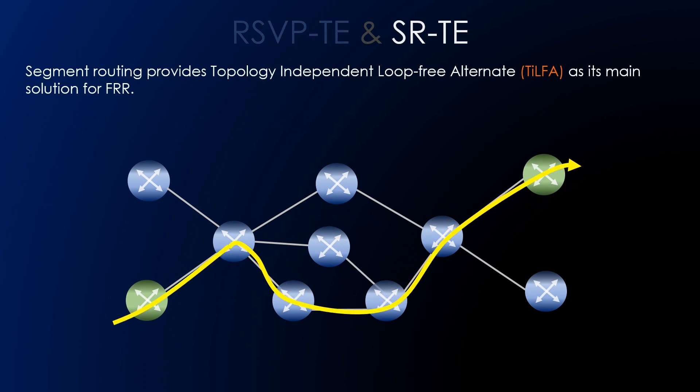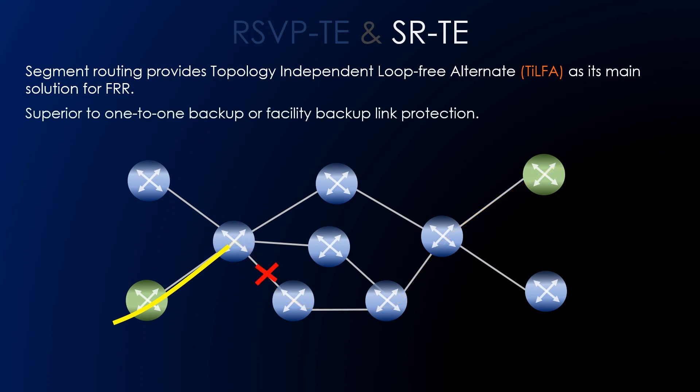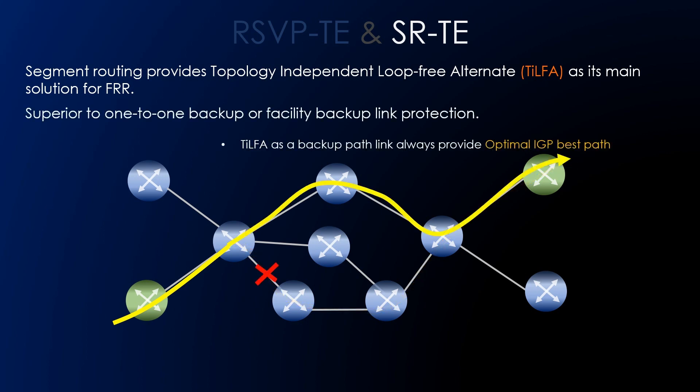In case of segment routing, TI-LFA provided by segment routing is superior to one-to-one backup or facility backup link protection provided by RSVP-TE. In RSVP-TE, if the link fails, the protecting LSP reroutes traffic to the protected next hop, which often tends to a sub-optimal path. This does not happen with TI-LFA, as a backup path for a link always follows the optimal IGP best path, assuming the failed link is out of the topology.